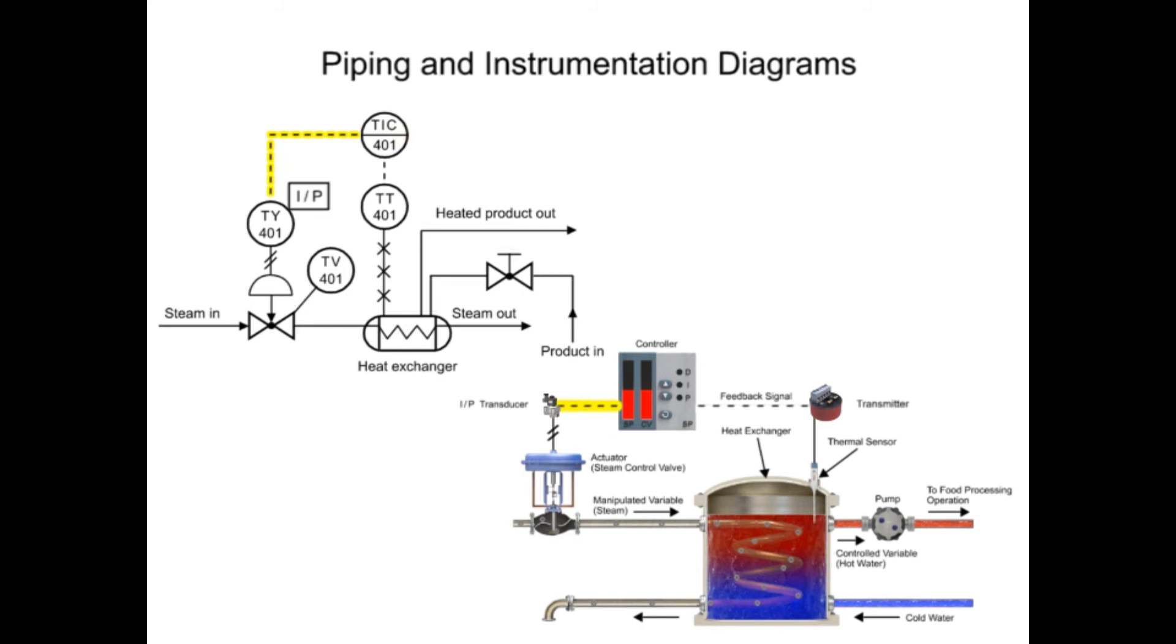An electronic signal from the controller is indicated by the dashed line. The controller output is connected to the transducer that controls the steam flow, indicated by the second letter Y of the functional identifier.